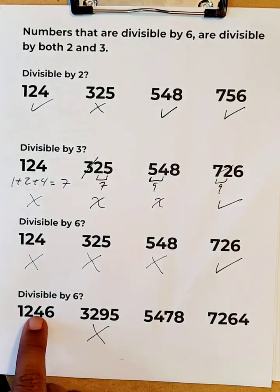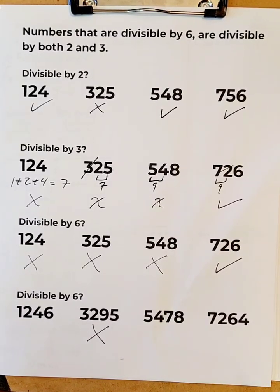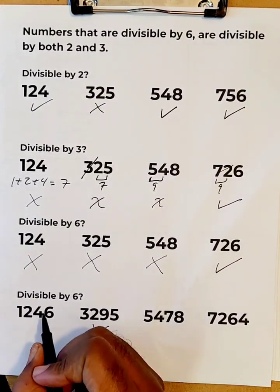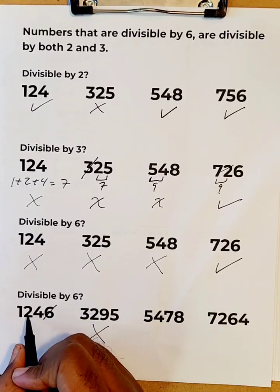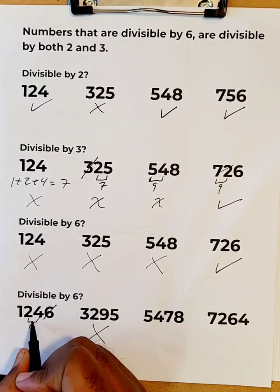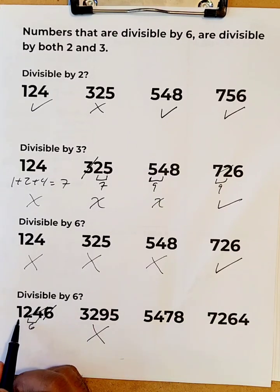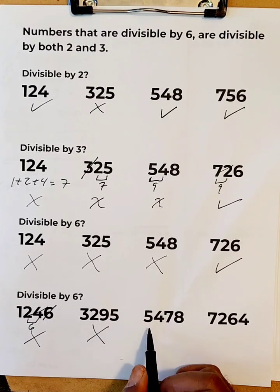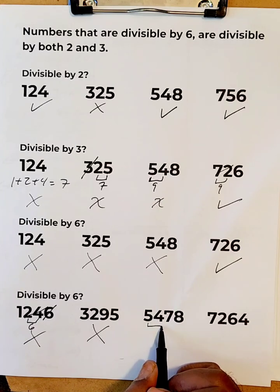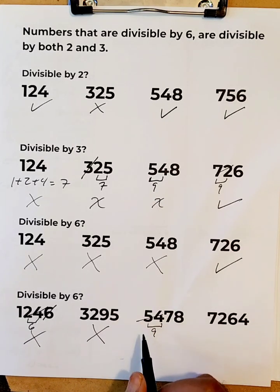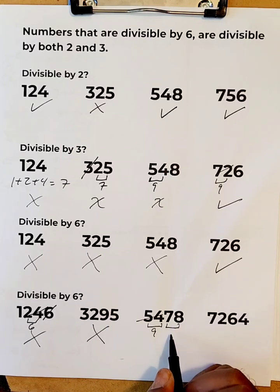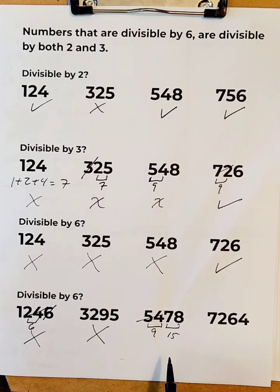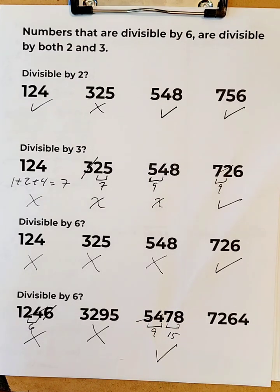Since these are divisible by two, we just need to know if they're divisible by three. We can get rid of the 6 and 2 — those make 6, so we can eliminate that. The 1 left over is not divisible by three. For the next number, 5 and 4 make 9, which is divisible by three. And 7 and 8 make 15, which is also divisible by three. So this number is divisible by both two and three.